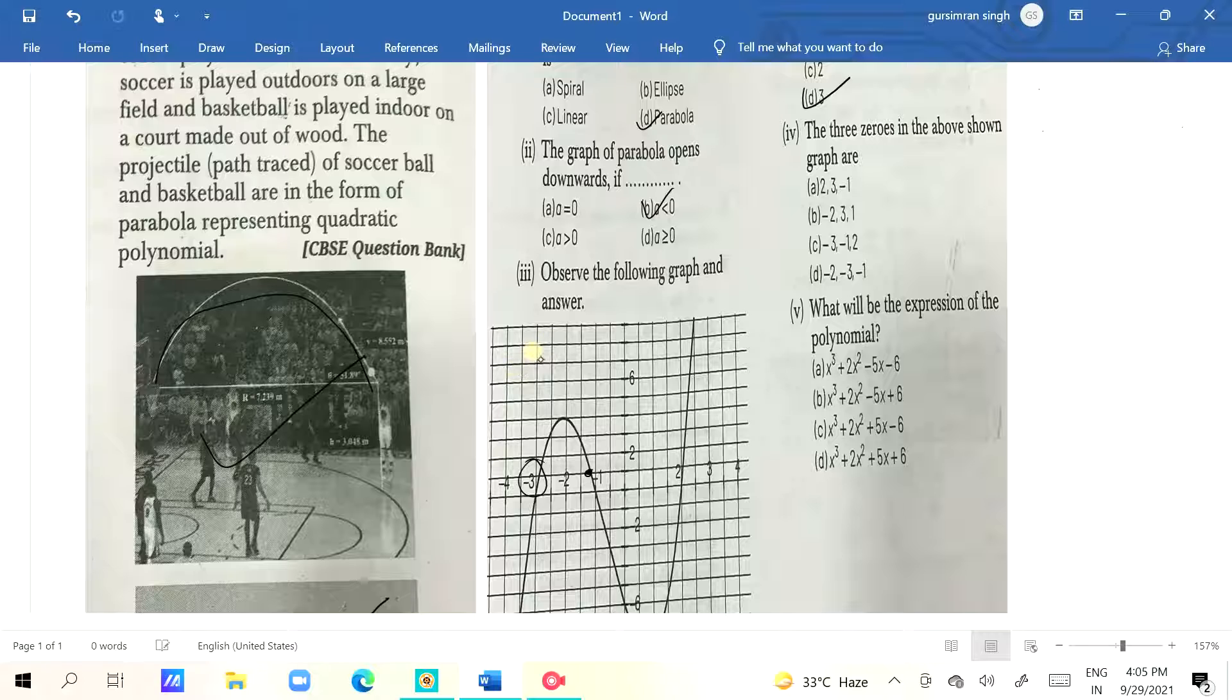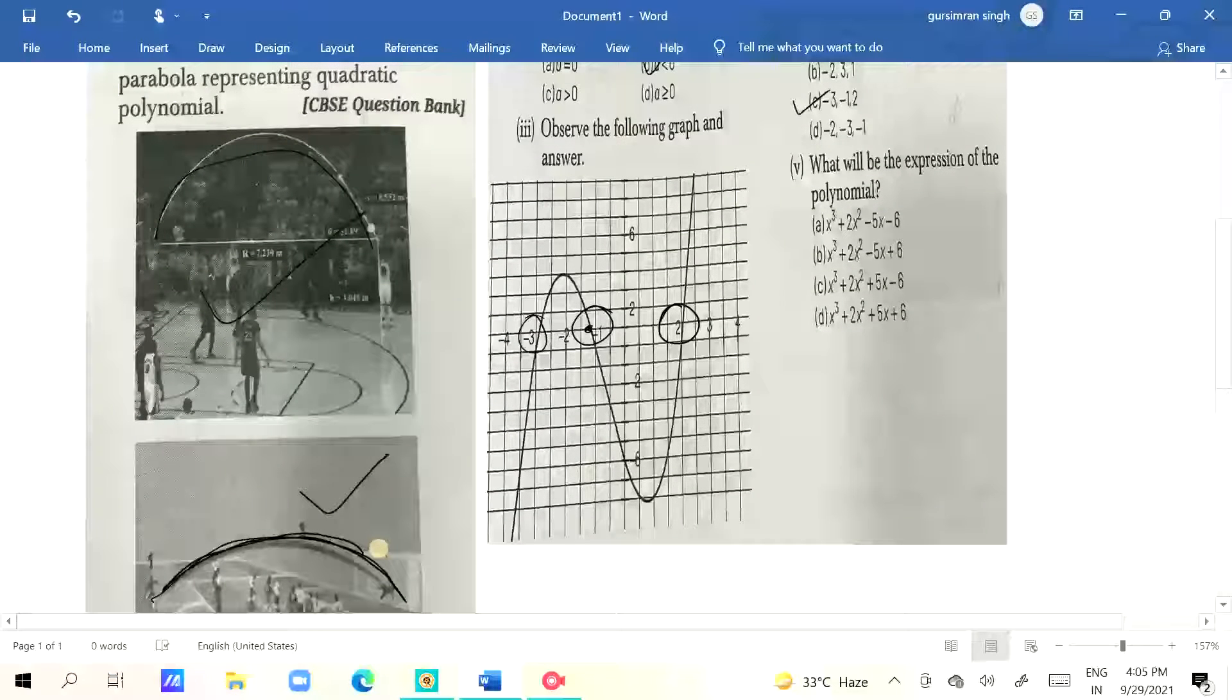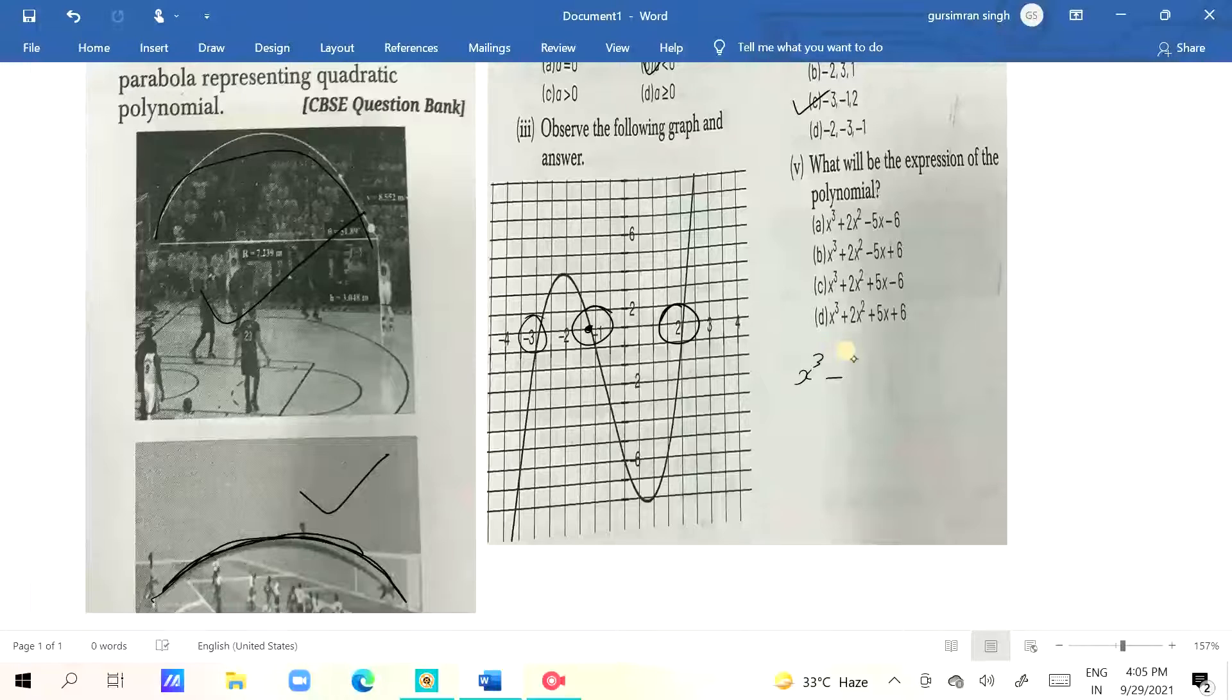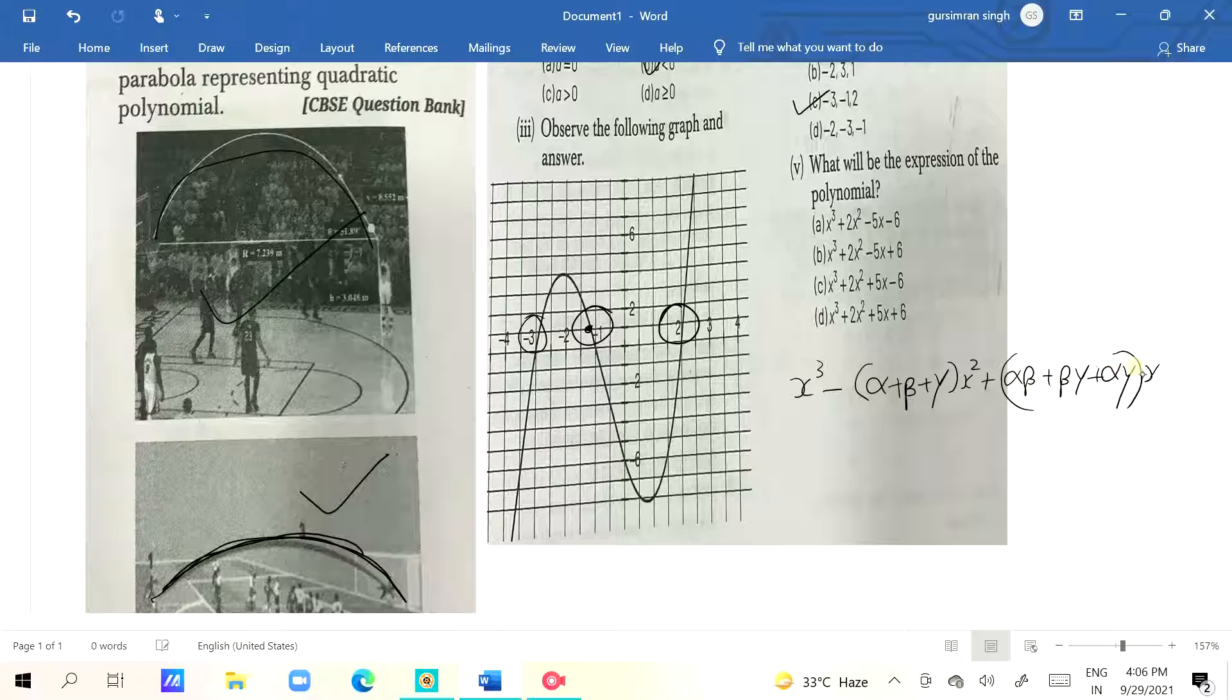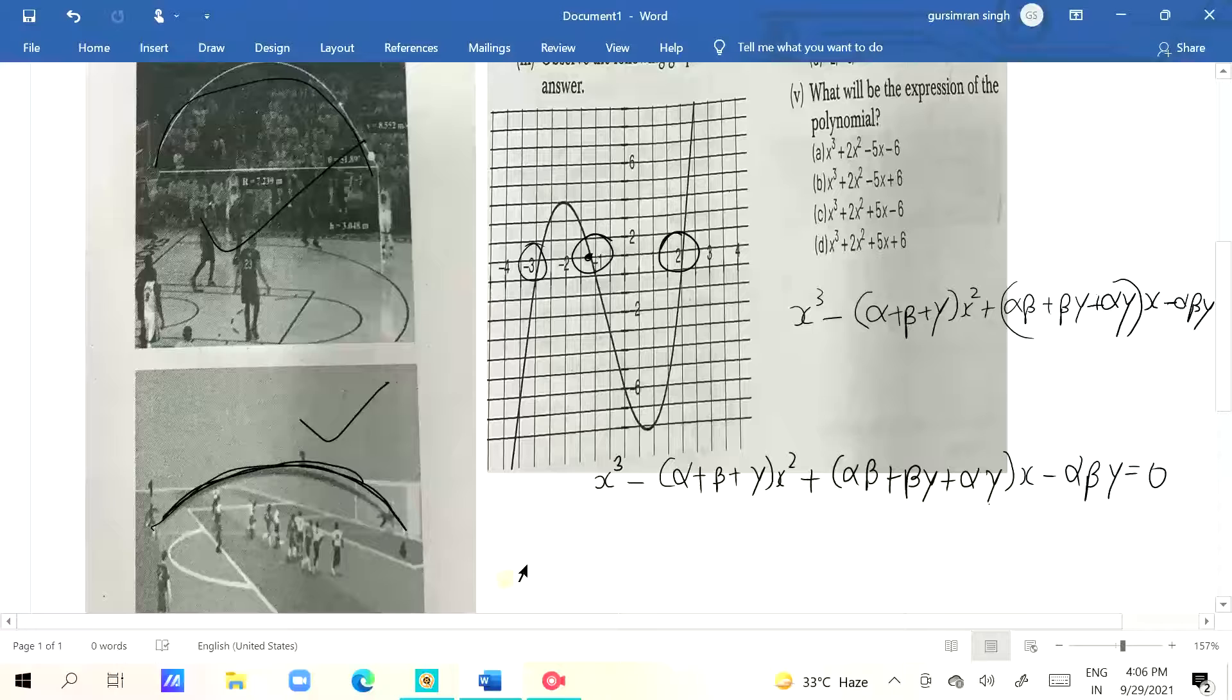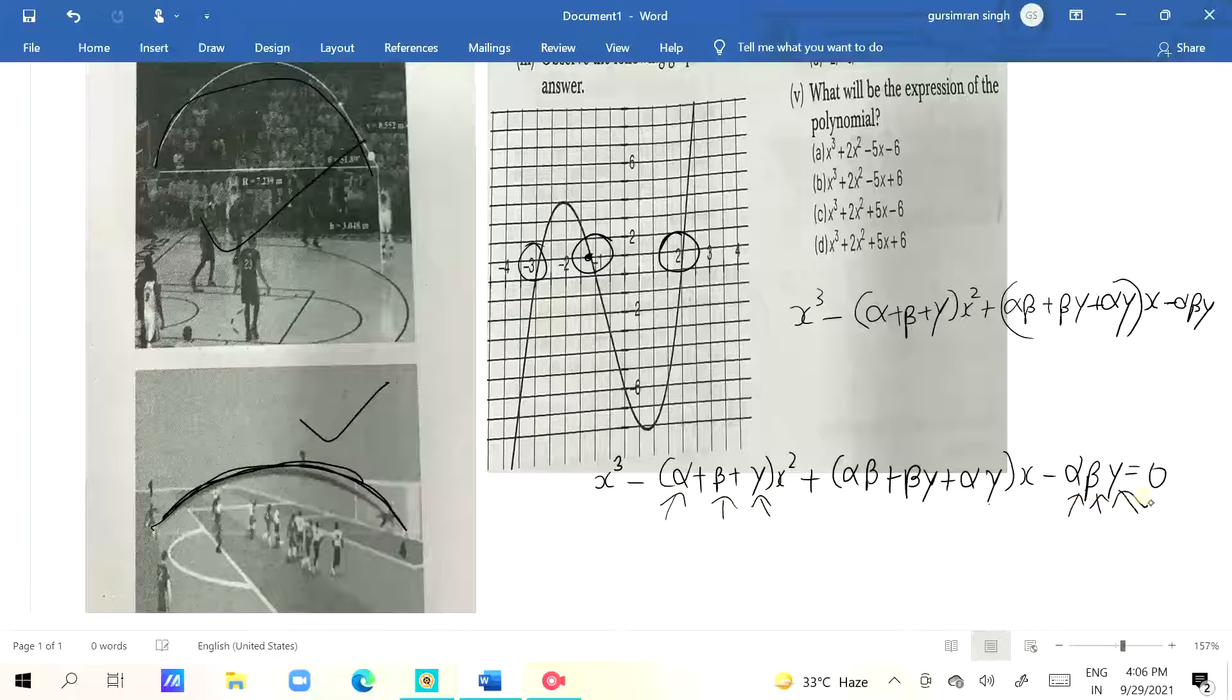See, it's on the x-axis. We are ready to put x minus alpha, x minus beta, x minus gamma equals to zero. Then we will put all the numbers to get the formula: x³ minus (alpha plus beta plus gamma)x² plus (alpha·beta plus beta·gamma plus alpha·gamma)x minus alpha·beta·gamma equals to zero. That's what the cubic polynomial is. Alpha plus beta plus gamma, alpha·beta plus beta·gamma plus alpha·gamma.